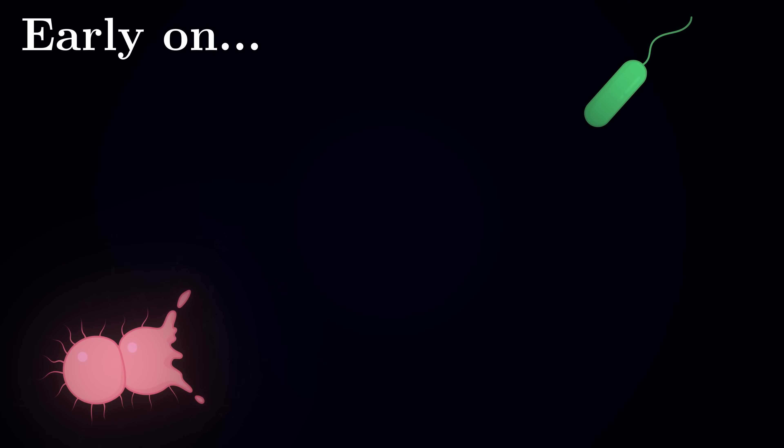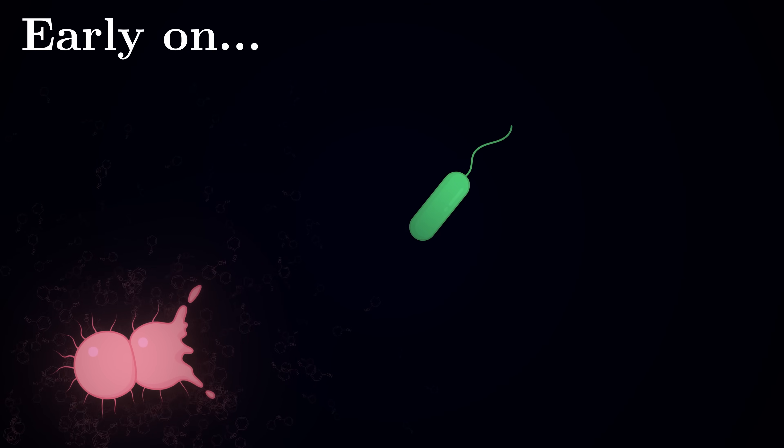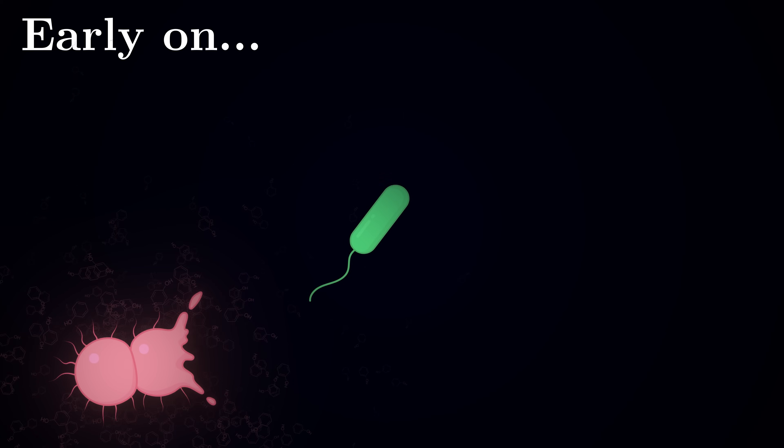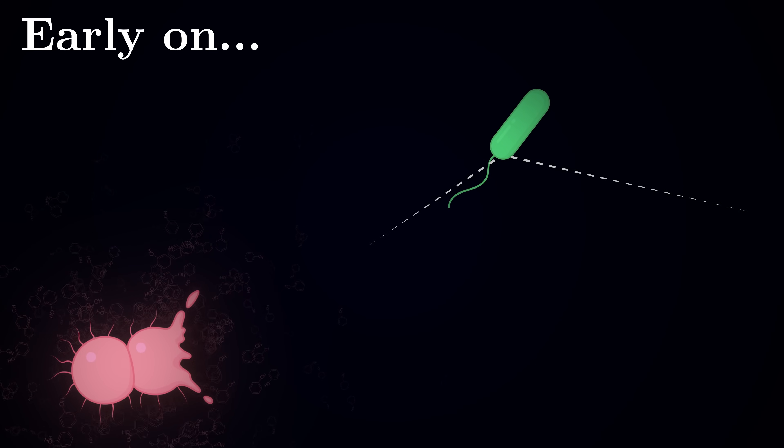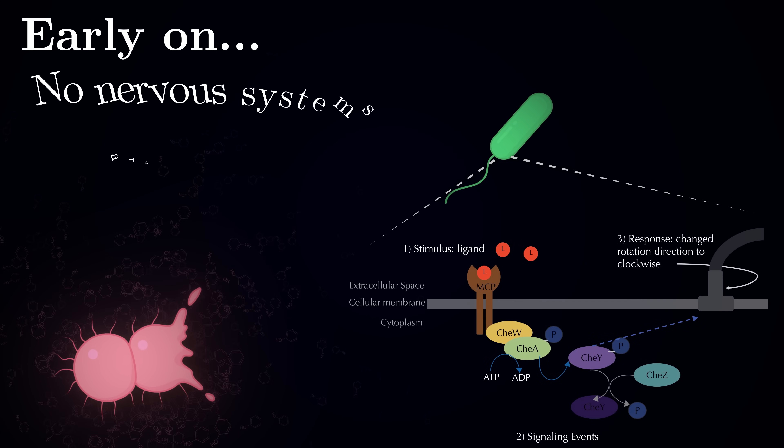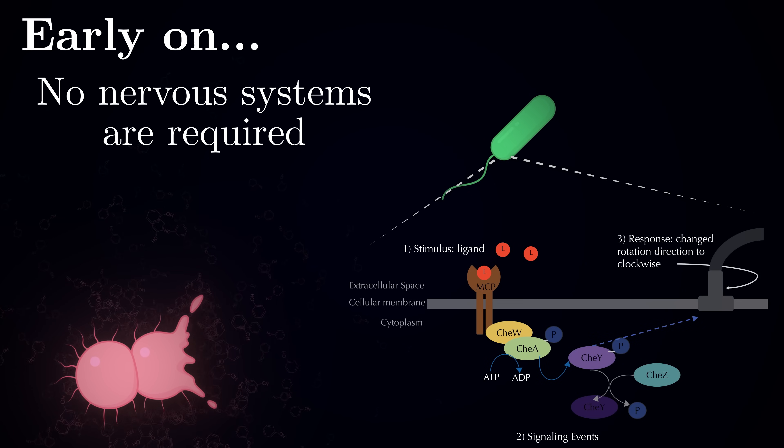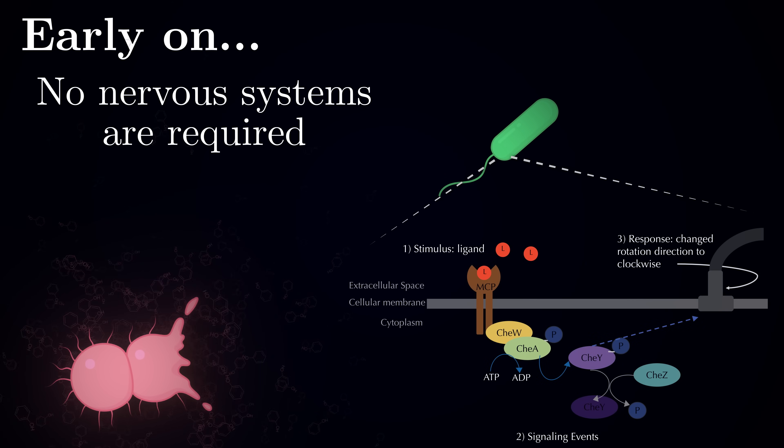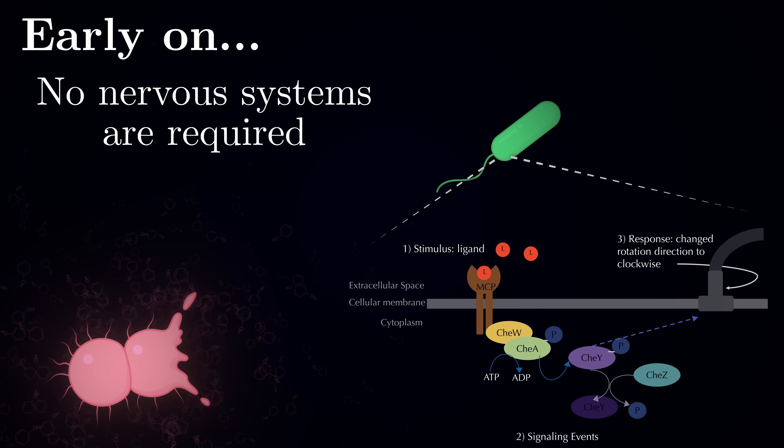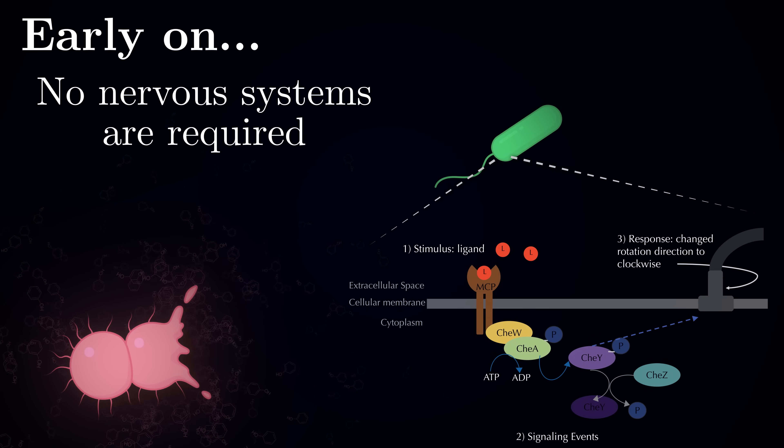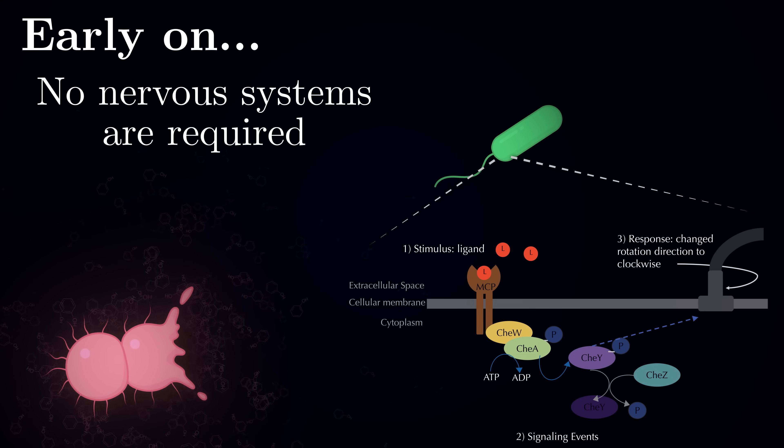To achieve this, organisms need to react to stimuli appropriately. For instance, if you sense harmful chemicals, you need to swim away from them. But such simple reactions can be accomplished through basic biochemistry. No complex nervous system required. In fact, you don't even need to be multicellular for this.